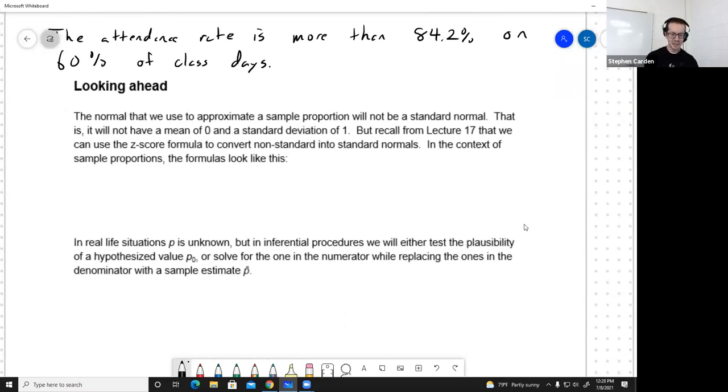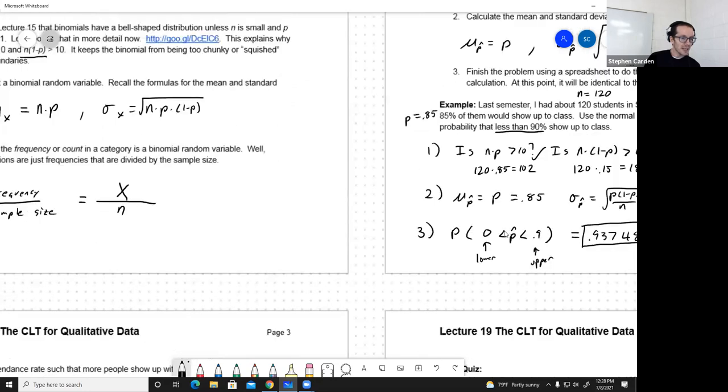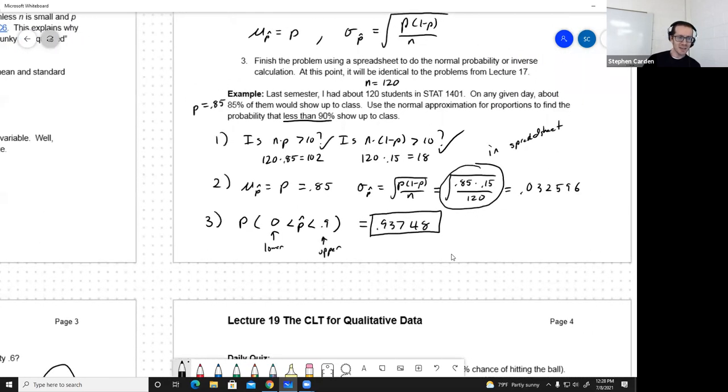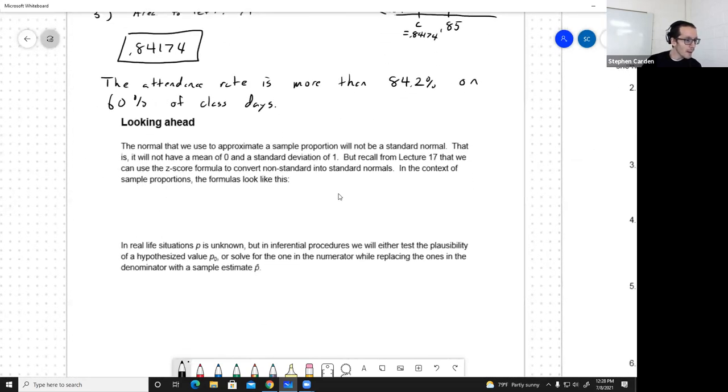Just looking ahead a little bit. After this module, we're going to get back into statistics. We're going to be doing inferential statistics. And here's a couple of ways that we're going to use the material out of this lecture 19 and what's coming. The normal that we use to approximate a sample proportion, it's not going to be a standard normal. So, yeah, looking over here, the mean is not zero. The standard deviation is not one. But we can use the z-score formula to convert things into a standard normal, right? Sure.